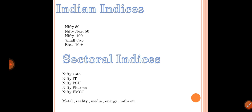Indian indices consist of many types of Nifty: Nifty 50, Nifty Next 50, Nifty 100, Small Cap, Mid Cap, and about 10 more. These are groupings of companies based on market capitalization — Nifty 50, Nifty Next 50, Nifty 100, Nifty 200, Nifty 500, Small Cap, Mid Cap, and so on.